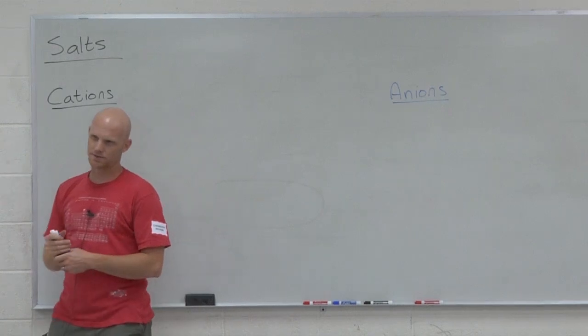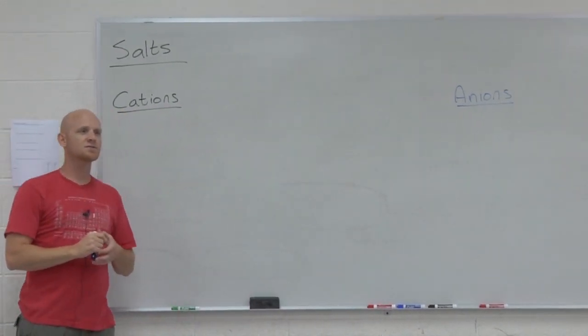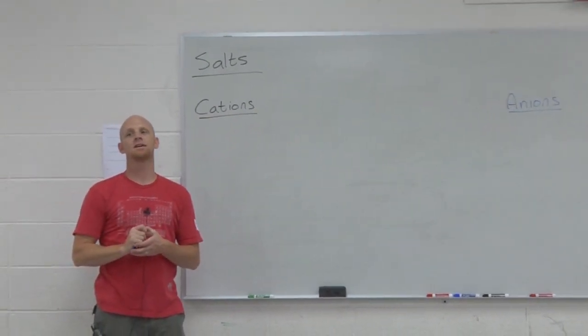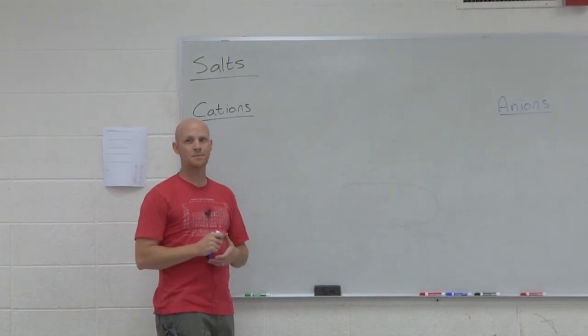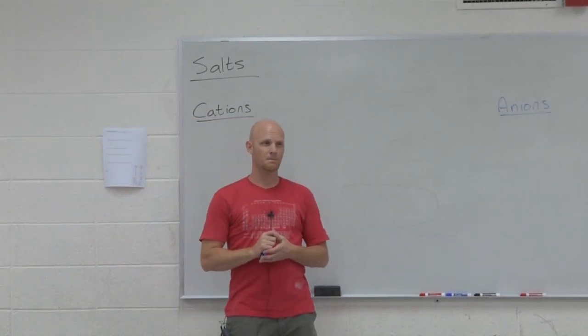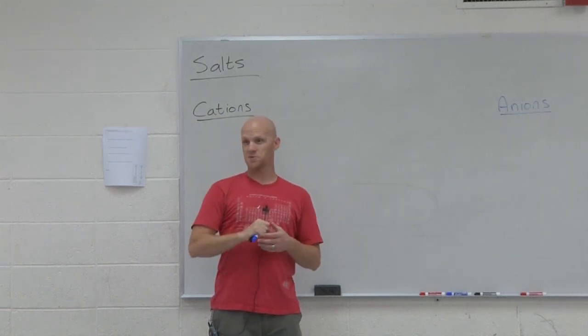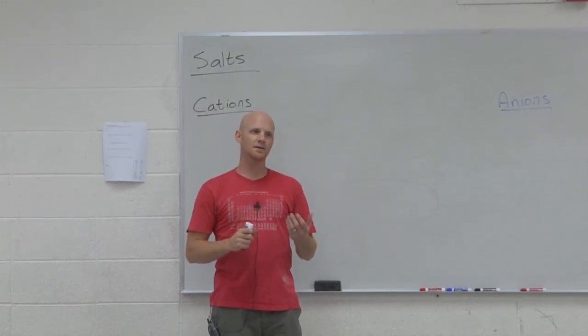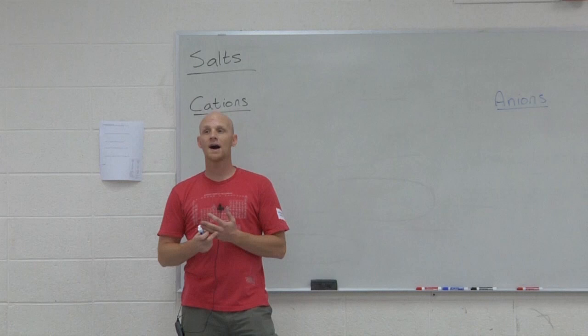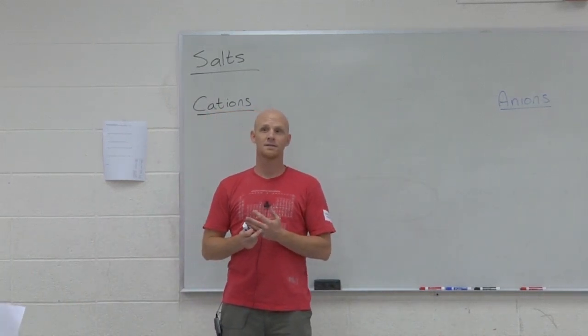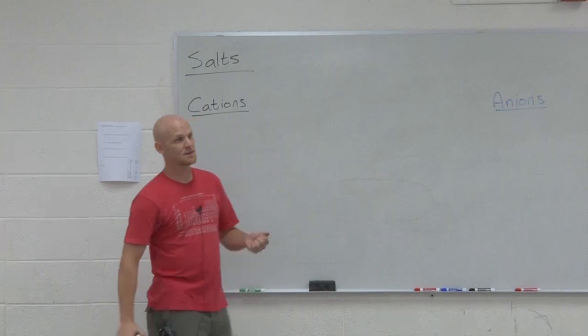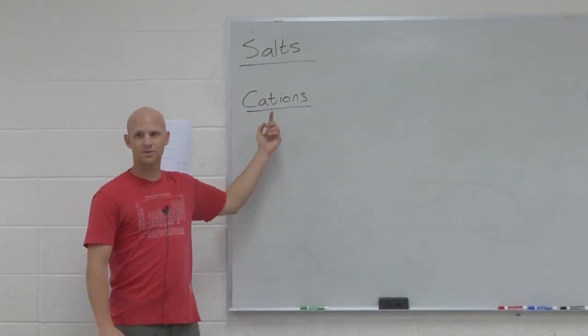If you recall, we talked about some Lewis acid examples that only fit Lewis's definition. Metal ions was one of them. Metal ions form cations. They like to lose electrons and form cations.